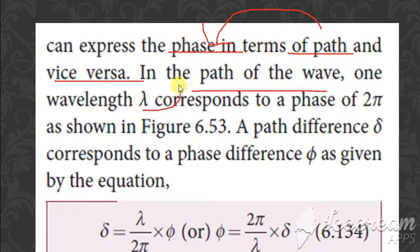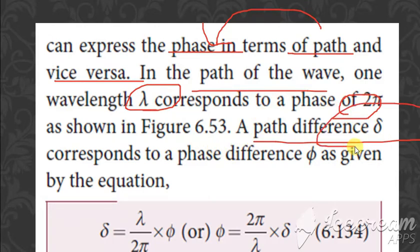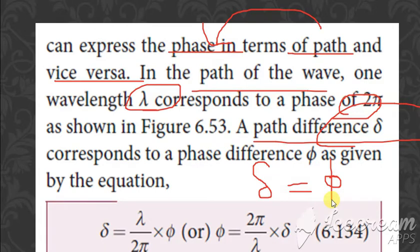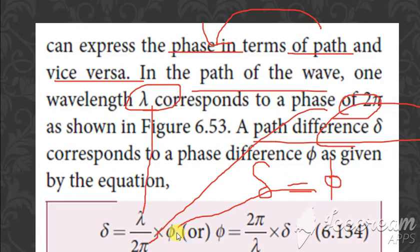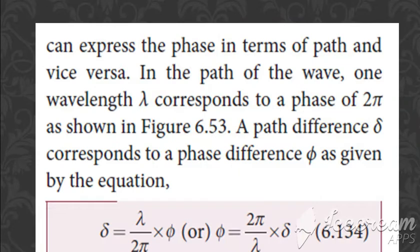If the path corresponds to lambda, then the phase corresponds to 2π. A path difference δ corresponds to a phase difference φ, given by the relation: δ = (λ / 2π) × φ. If we need the value of φ alone, rearranging gives φ = (2π / λ) × δ. This is the relation you have to know between the phase and the path difference.